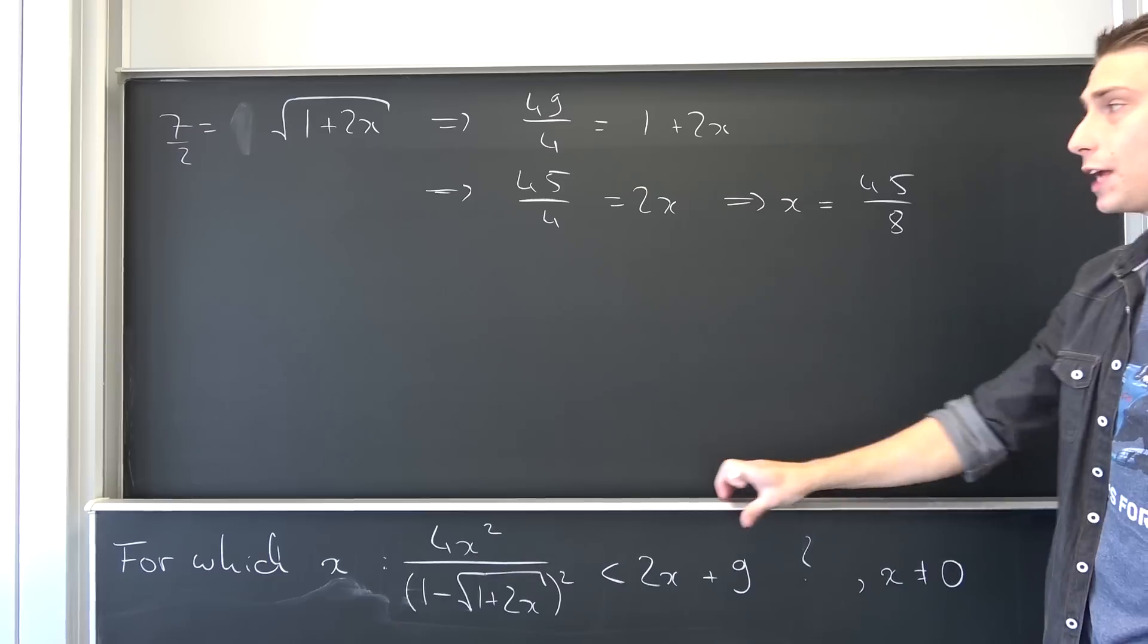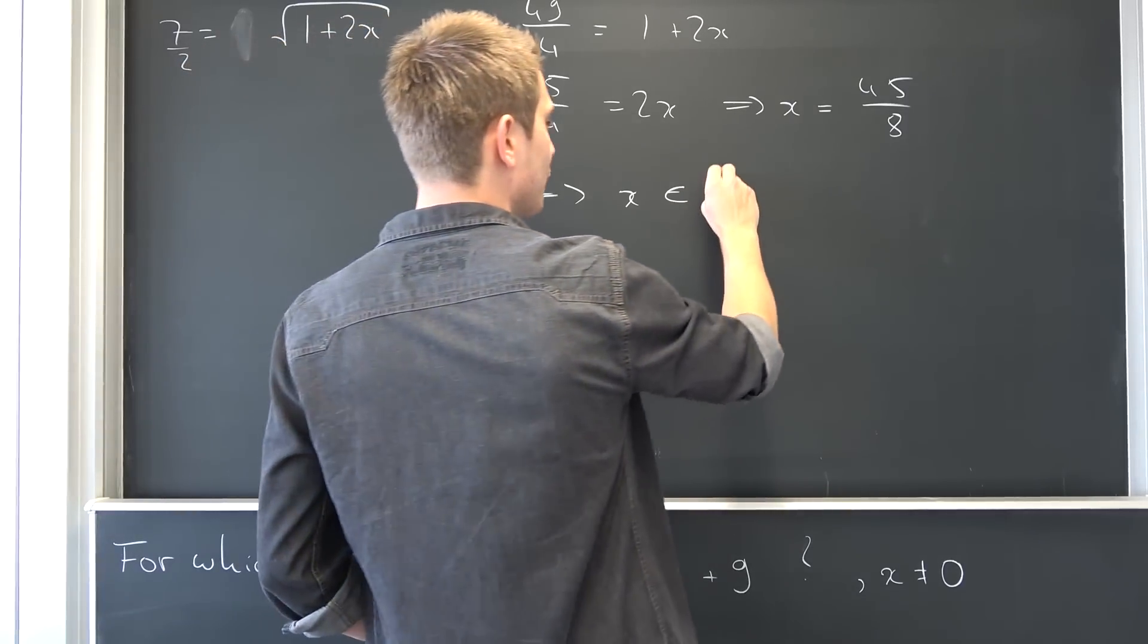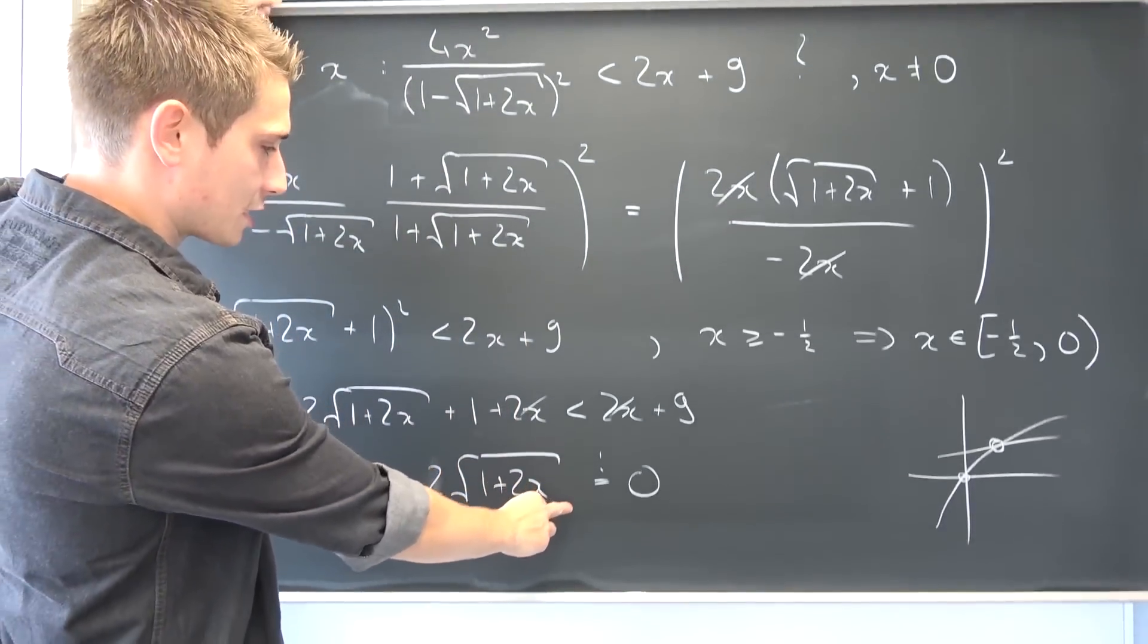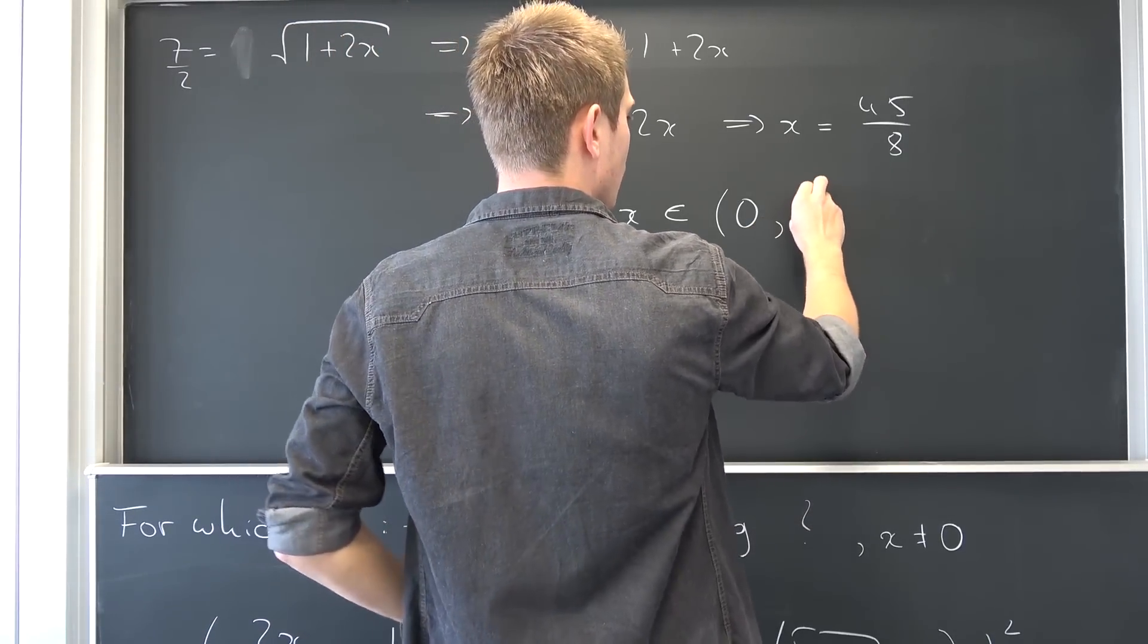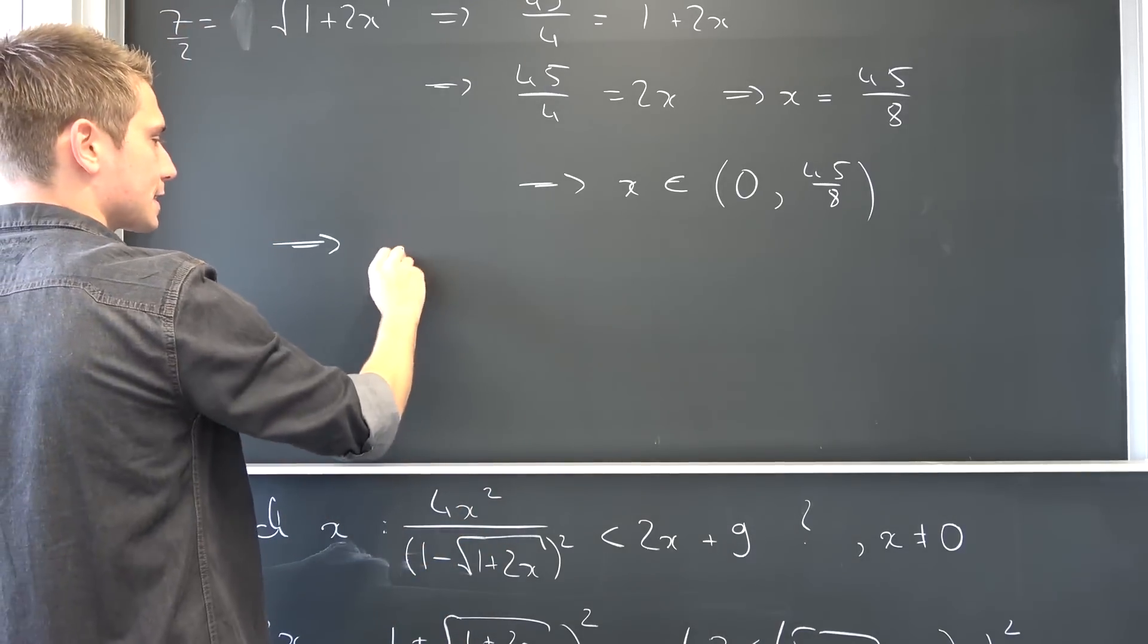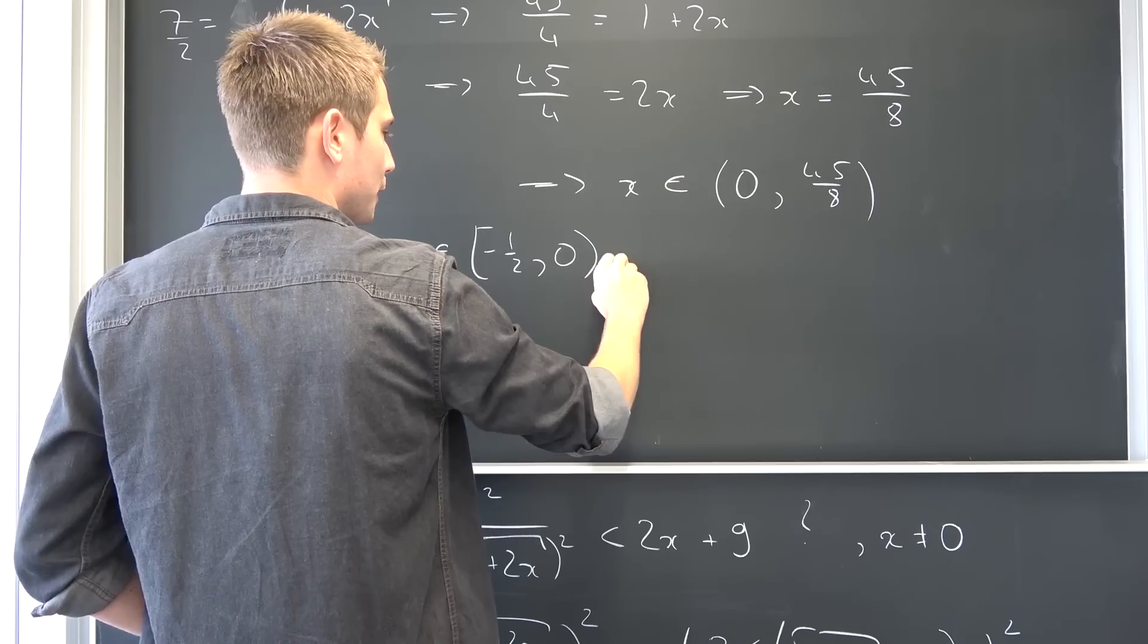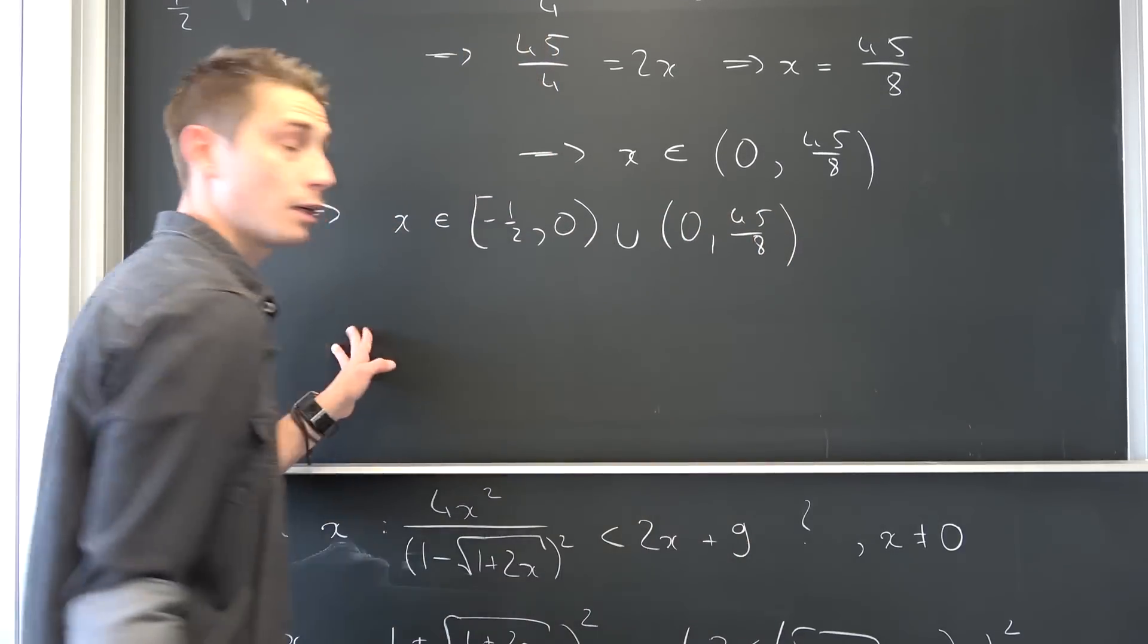And this is actually our upper bound. Meaning x is also element of the interval zero and this is the part that we are not allowed to hit anymore because this is the point where our inequality doesn't work anymore. This is the zero point and we don't want to hit that. Meaning it's between 0 and 45 over 8. Meaning overall the solution to our IMO problem is thus x being element of the union of the interval negative one-half, 0 in union with 0, 45 over 8. And this is it.